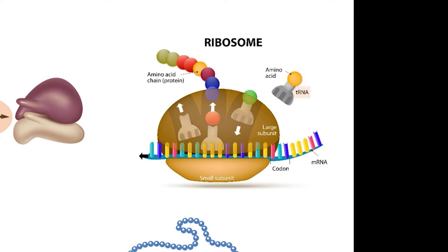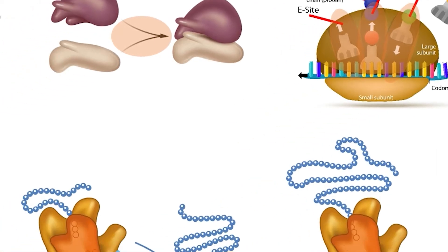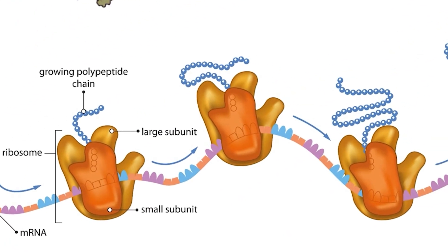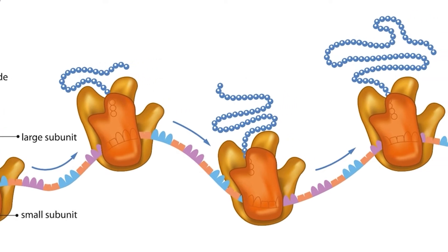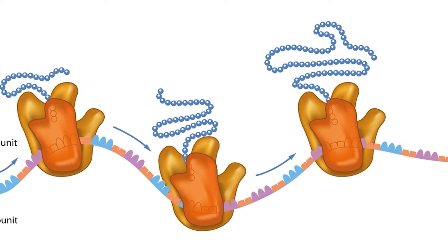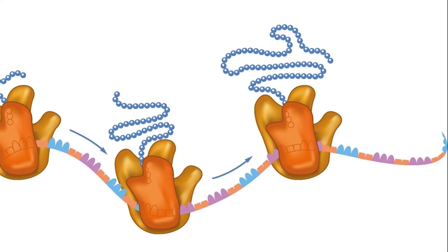Each ribosome has three areas where transfer RNAs can fit, known as sites. Transfer RNAs enter at the A site. If they can hydrogen bond to the codons presented on the mRNA molecule, they can advance to the P site. Here, the ribosome catalyzes a reaction that removes the amino acid from the tRNA molecule and attaches it to the growing polypeptide chain. Finally, the used tRNA is discarded through the E site. You can remember these sites like this: A equals acceptance, P equals peptide bond formation, and E equals exit. The ribosome will slowly move along the mRNA molecule, reading each codon, matching it to a tRNA molecule, and bonding the appropriate amino acid to the growing chain. The polypeptide is completed when the ribosome reads the stop codon, allowing the ribosome to release the chain and start translating a new mRNA molecule.